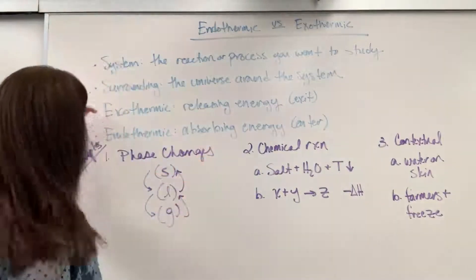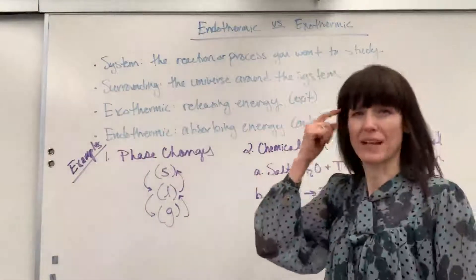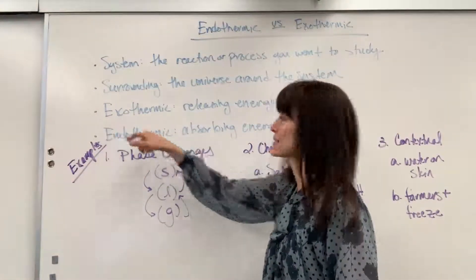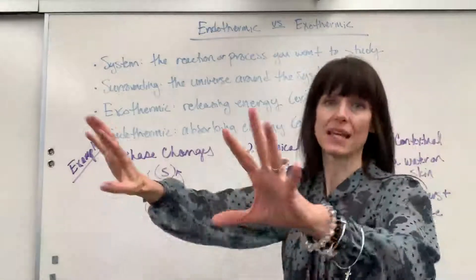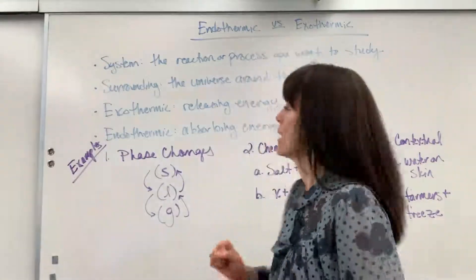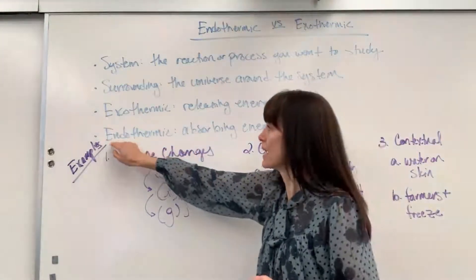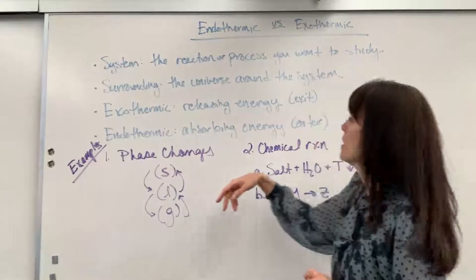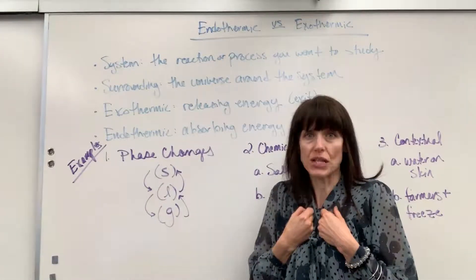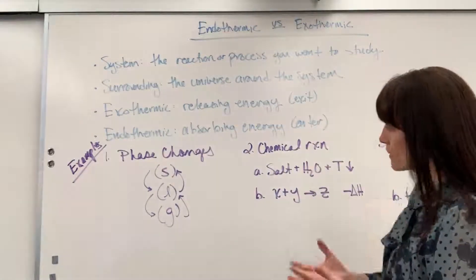We want to know: is the system exothermic or endothermic? Exothermic — I think of the word 'exit,' EX. Exothermic means releasing energy; the system gives energy to the surrounding. Endothermic — I think of 'enter,' EN. That's absorbing energy. The system is taking energy from the surrounding and putting it inside itself.